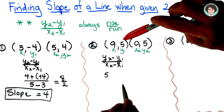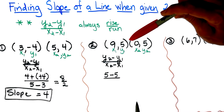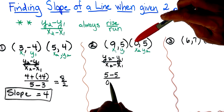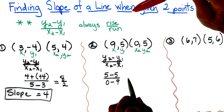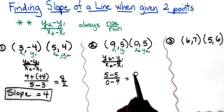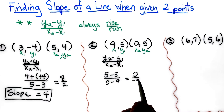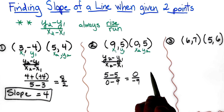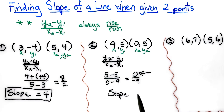Looking at this second example, y2 is 5 and y1 is 5, so it's 5 minus 5 over 0 minus 9. When we simplify, the numerator 5 minus 5 is 0, and 0 minus 9 is negative 9. Whenever you have a 0 in the numerator, the slope is equal to 0.